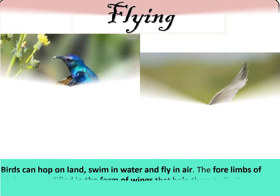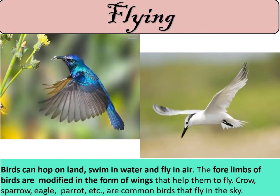The next movement of animals is flying. Birds can hop on land, swim in water, and fly in air. The four limbs of birds are modified in the form of wings that help them to fly. Crow, sparrow, eagle, parrot, and others are common birds that fly in the sky.